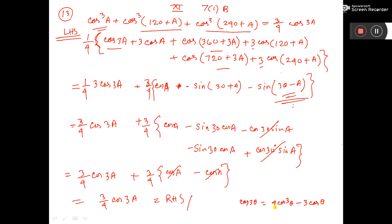So, from here, cos cube theta is equal to — this will come to this side — so, 1 by 4 into cos 3 theta plus 3 cos theta. That is what I have written here: cos 3 theta plus 3 cos theta. 1 by 4 I took common; here also cos 3 theta plus 3 cos theta.